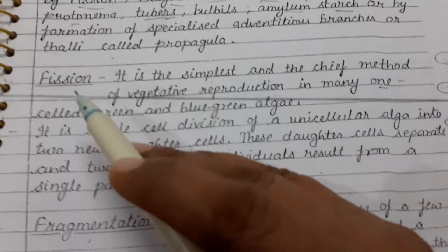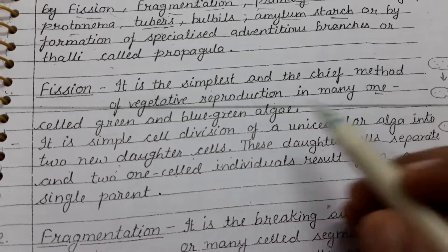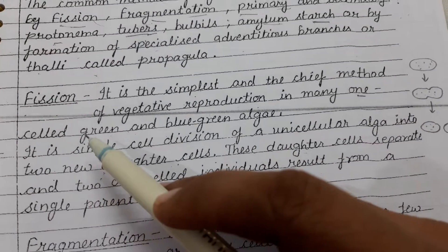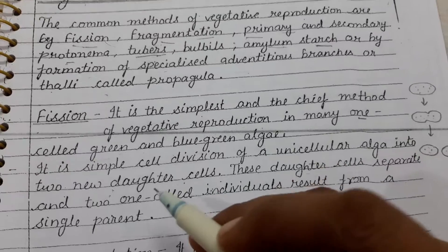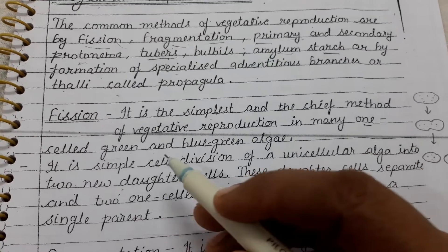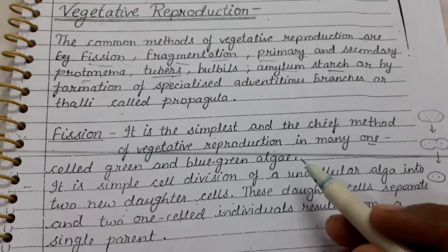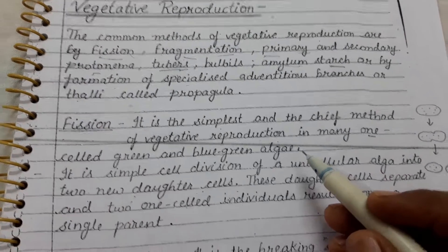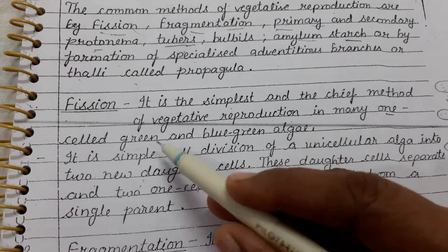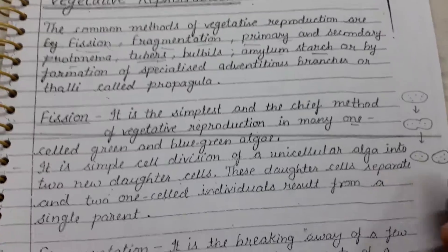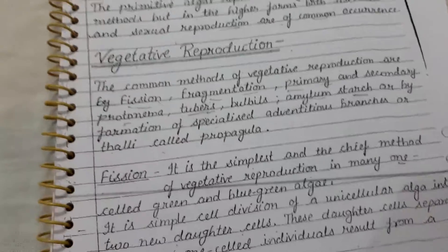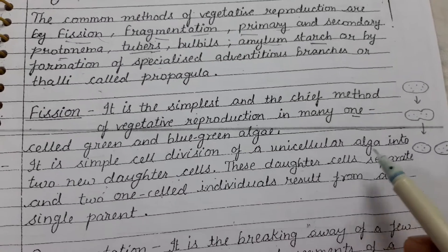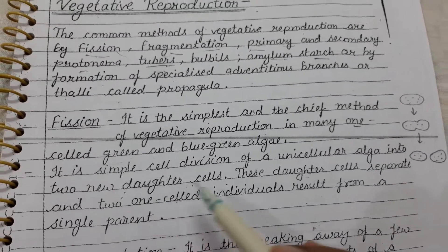Now we talk about fission. Fission is the simplest and the chief method of vegetative reproduction in many single-celled algae, especially found in single-cell algae like green and blue-green algae. For example, cyanophycean members like Nostoc and Anabaena, and in green algae like Chlamydomonas, they commonly reproduce by fission. Fission is simple cell division of a unicellular alga into two new daughter cells.